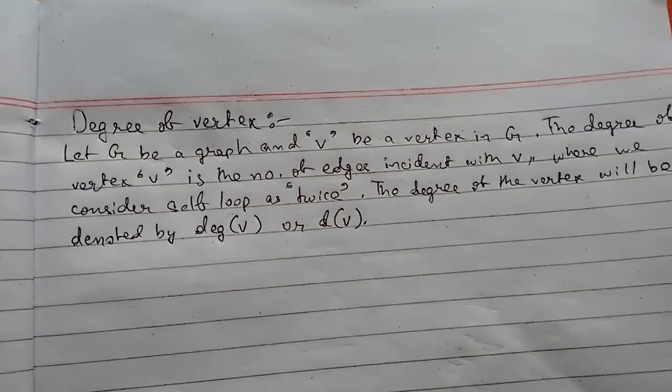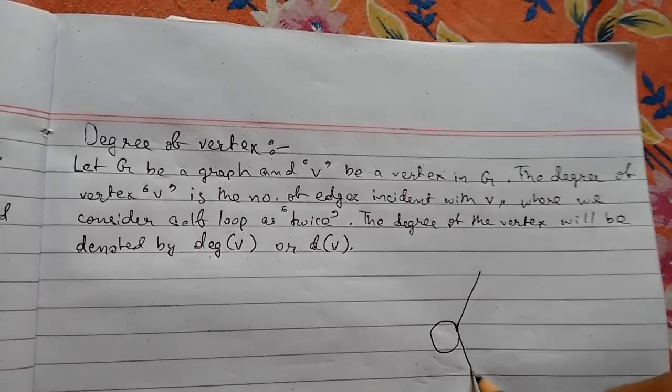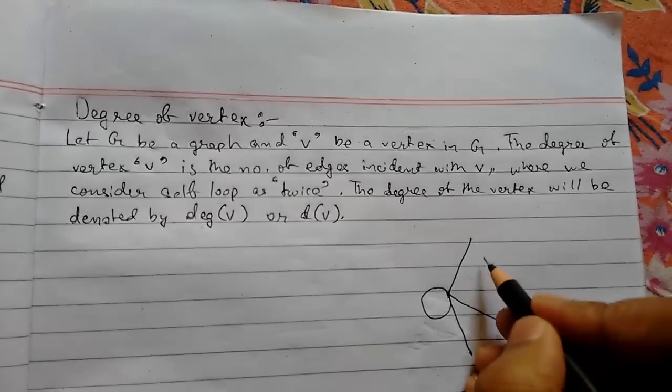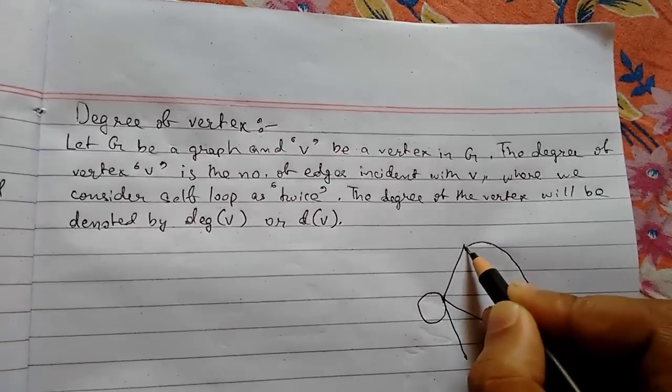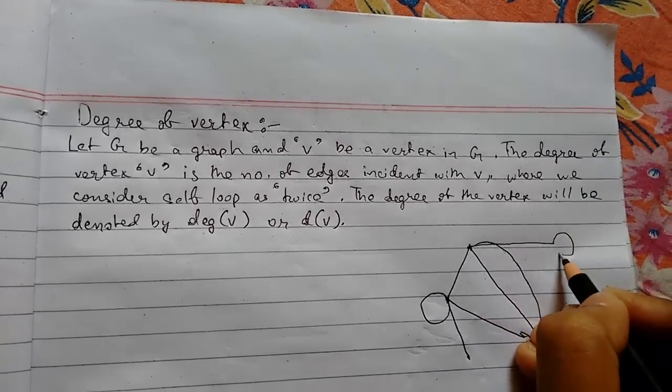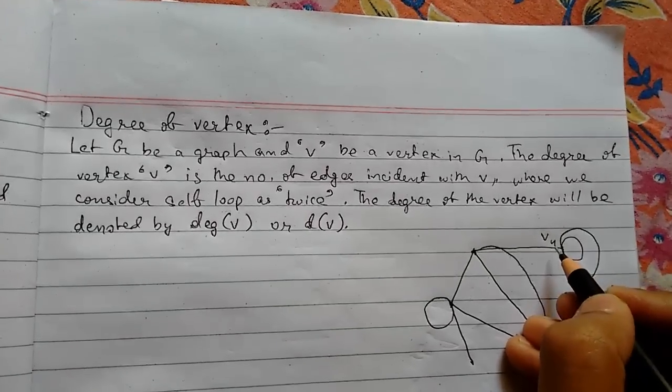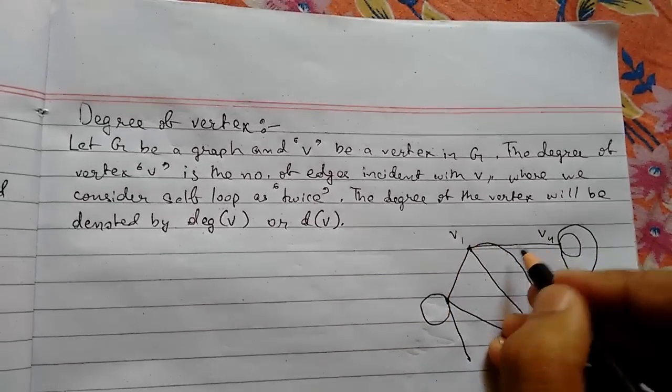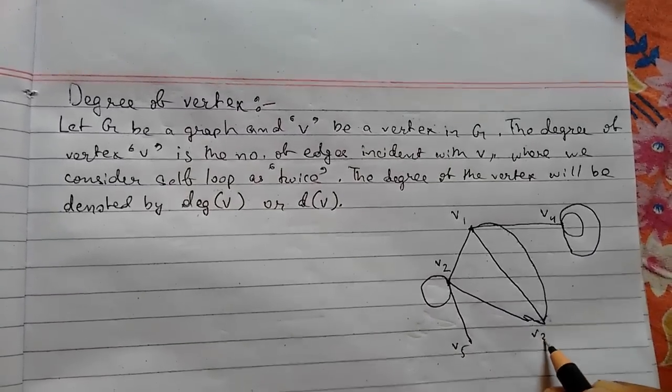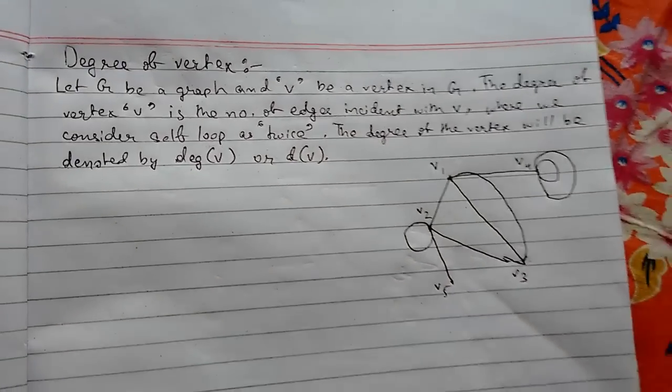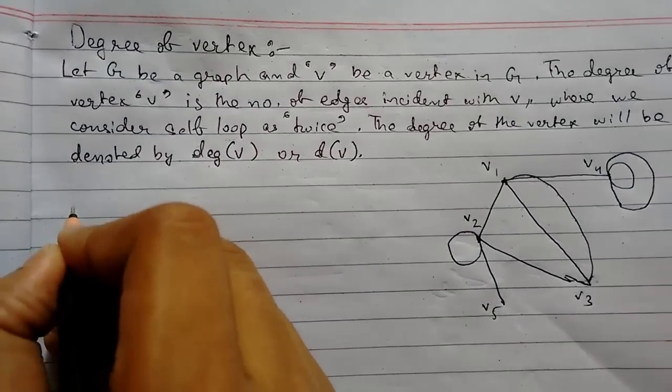Now let me explain with the help of an example. Suppose we have a graph something like this. V1, V2, V3, V4, V5. So this is a graph.